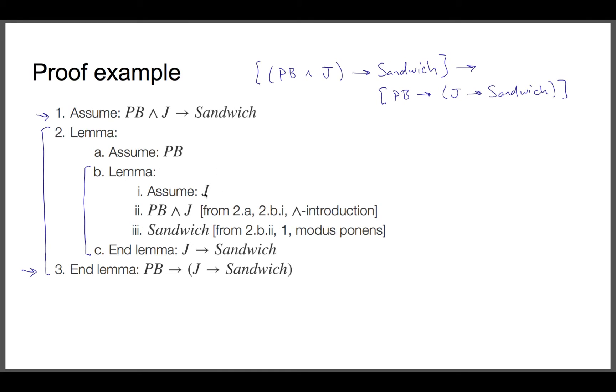In this lemma, we assume jelly. We pull in an assumption peanut butter from outside the lemma. Now, lemmas obey scoping rules just like computer code. Because this lemma is inside this lemma, I can use assumptions that are made in the outer lemma.